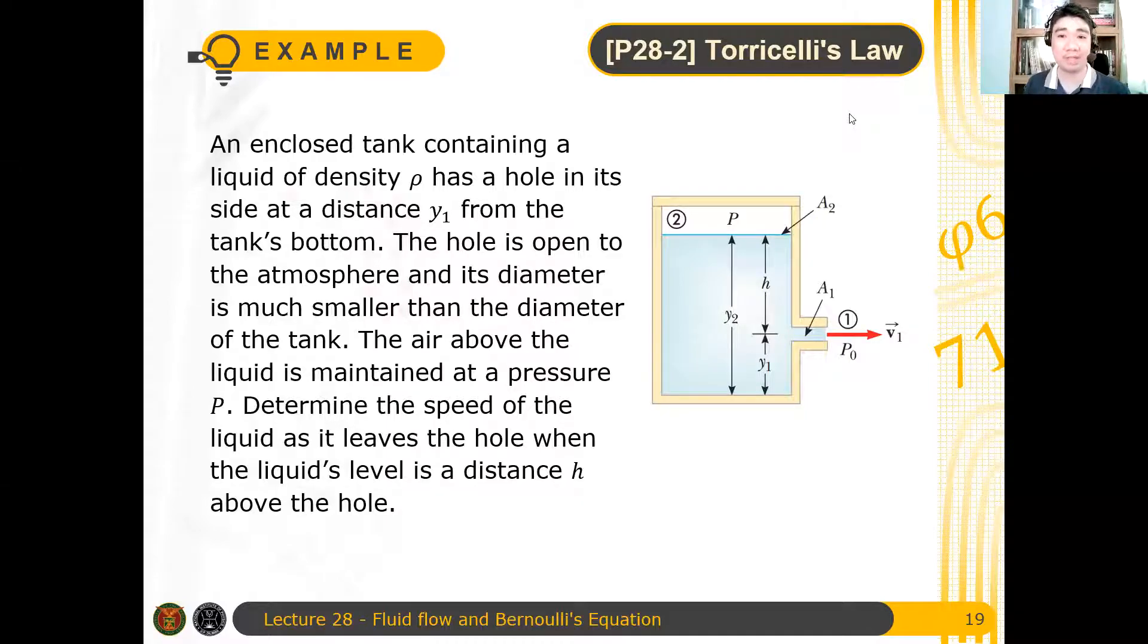Let's solve this problem, 28, Torricelli's Law. An enclosed tank containing a liquid of density rho has a hole in its side at a distance y1 from the tank's bottom. The hole is open to the atmosphere and its diameter is much smaller than the diameter of the tank. The air above the liquid is maintained at some pressure P. Determine the speed of the liquid as it leaves the hole when the liquid's level is at distance h above the hole.